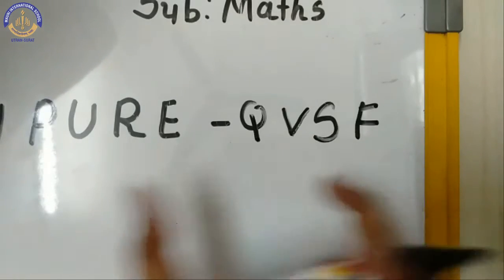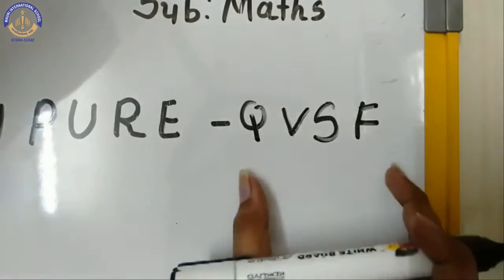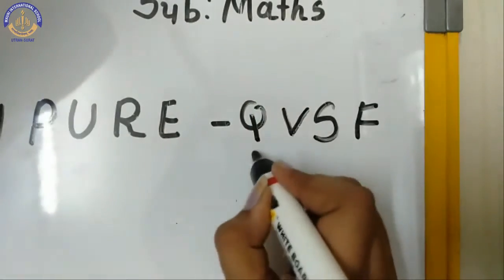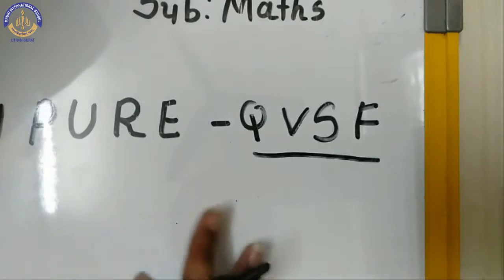This is our code. Okay, so now pure is secret. अभी pure को क्या बना दिया, हमने secret बना दिया, और क्या बन गया वो, QVSF. Understand.